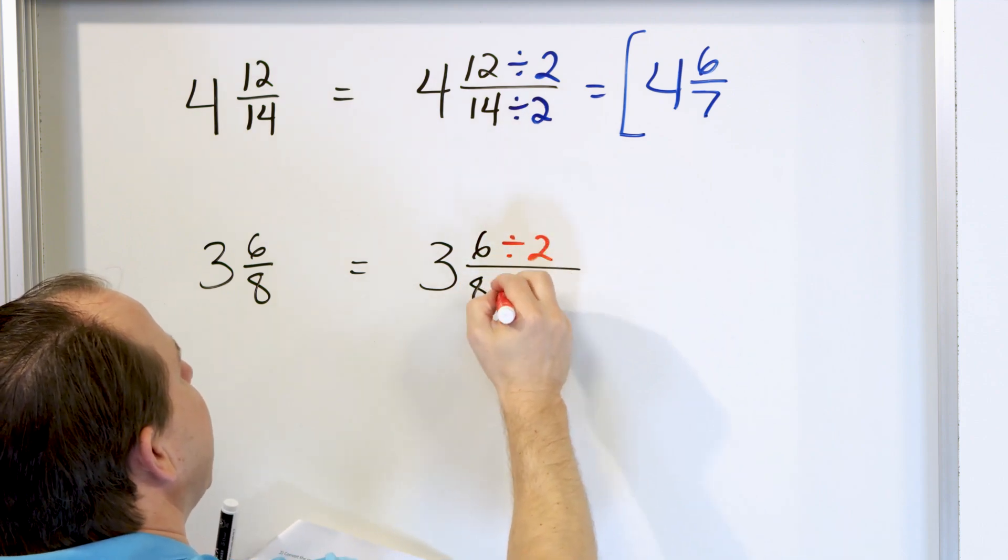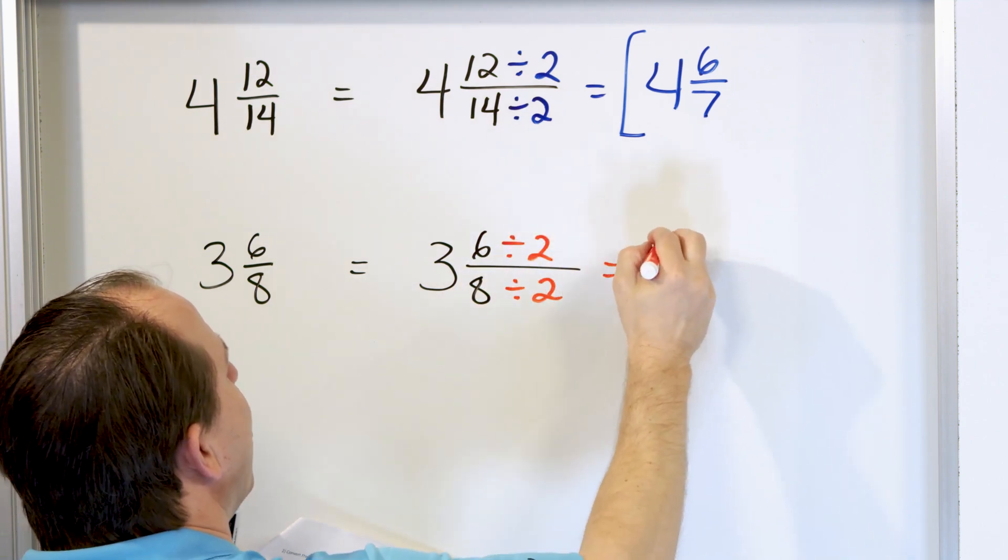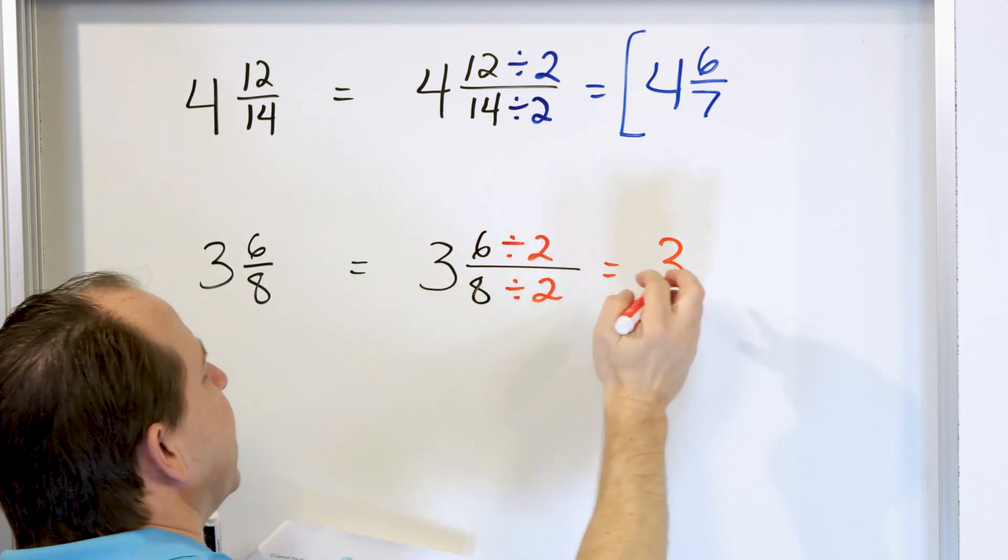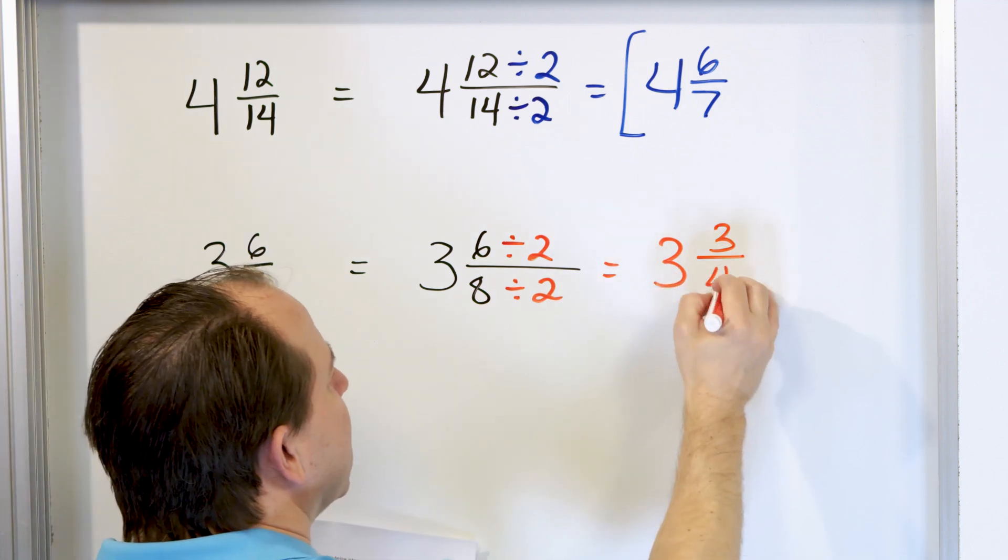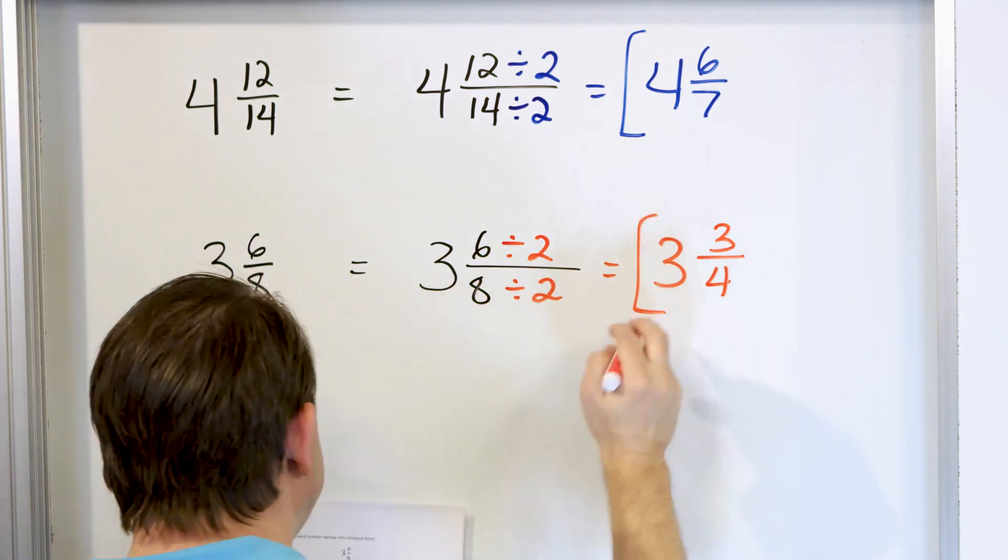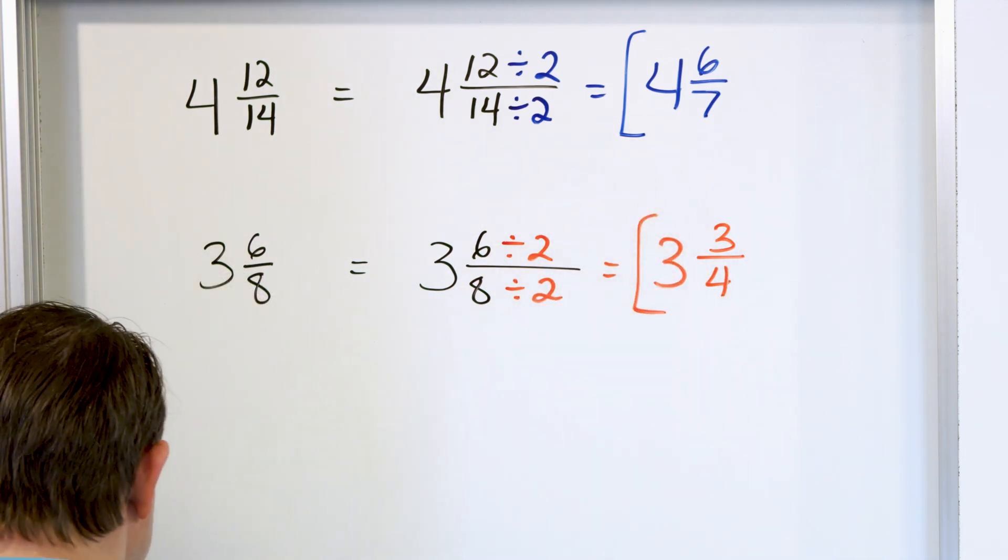Divide top by 2 and bottom by 2. Whole number of 3 is still there. 6 divided by 2 is 3, and 8 divided by 2 is 4, so we get 3 and 3/4ths. That's the final answer.